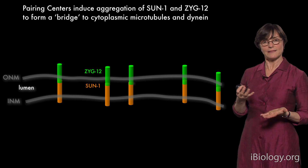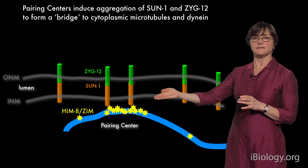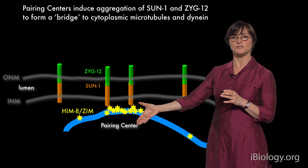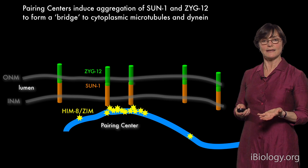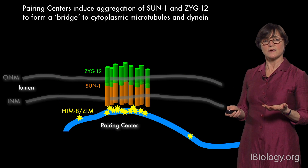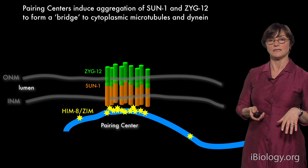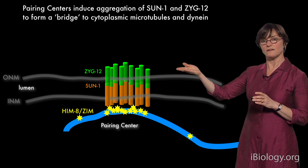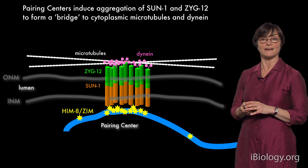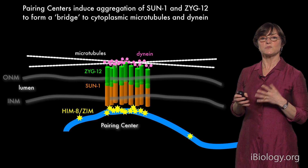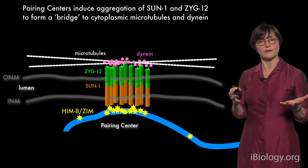A lot of experiments from my lab and other labs have revealed that in meiosis, the zinc finger proteins — HIM8 or the ZIM proteins — are recruited to the pairing centers, and by recruiting regulatory activities like kinases, they induce the aggregation of SUN1 and ZYG12 within the nuclear envelope to form these patches that we can actually see. We also knew from previous work that ZYG12 interacts with the microtubule cytoskeleton — specifically with the microtubule motor dynein and with microtubules.